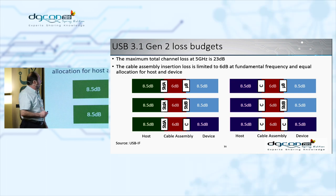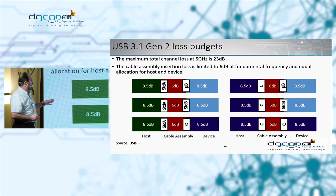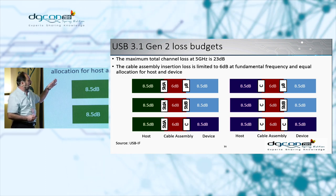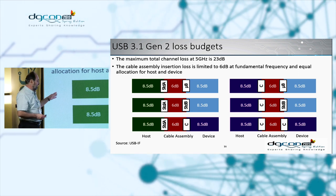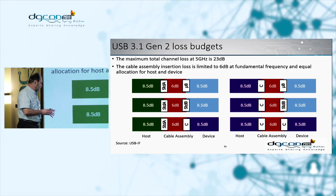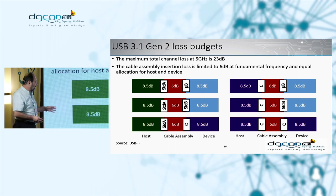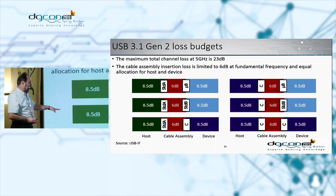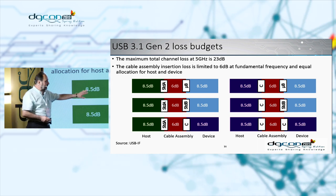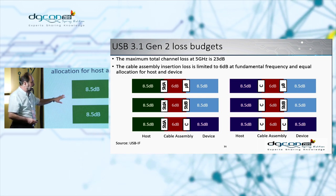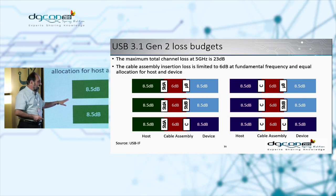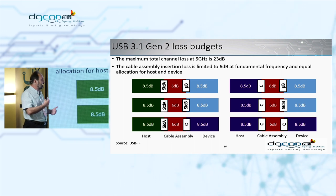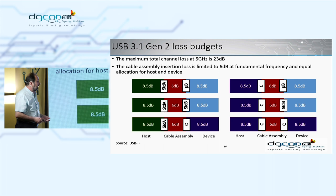In Gen 2, the maximum total loss was increased from 20 dB to 23 dB, with a symmetrical allocation of 8.5 dB for both host and device, and the cable assembly loss reduced to 6 dB. These slides show all the various topologies that are allowed.